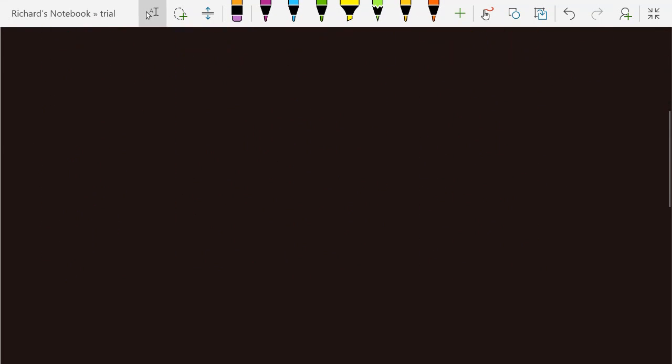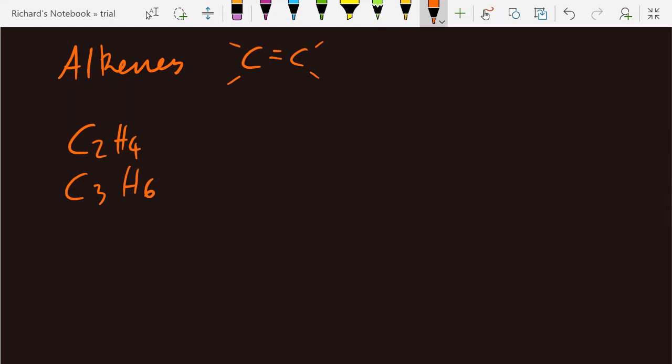Next one is the alkenes. If you recall, they have a carbon-carbon double bond. So there is no methene. Methene implies one carbon, so you're going to start with ethene, that's C2H4. Propene, and then butene.